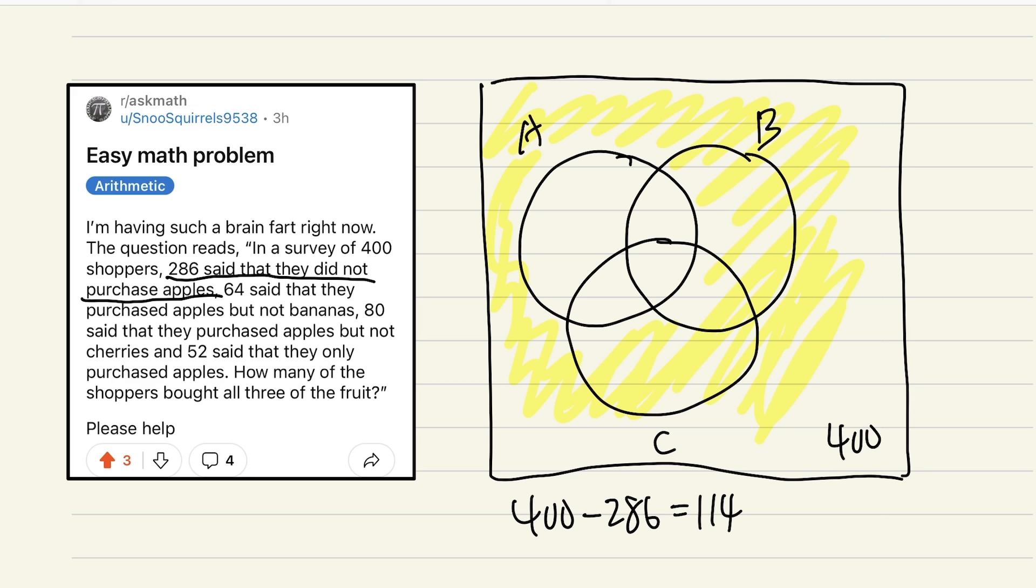This means this circle here, anyone who bought apples, I don't care about anything else, but any apples related had to be 114. So let me put that down. So that implies later on this number, this number, plus this number, plus that number, all together we must add up to be 114. So keep that in mind.